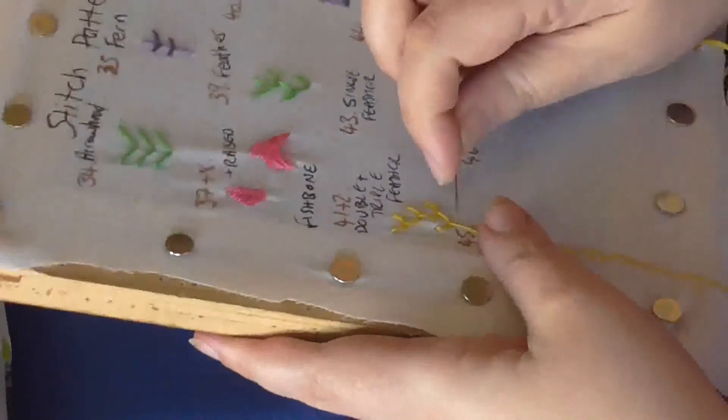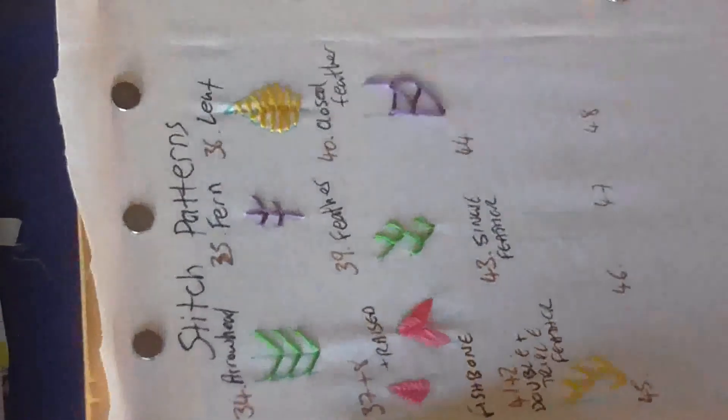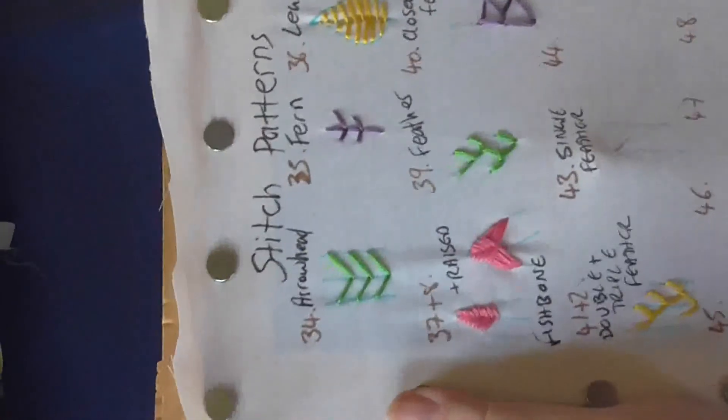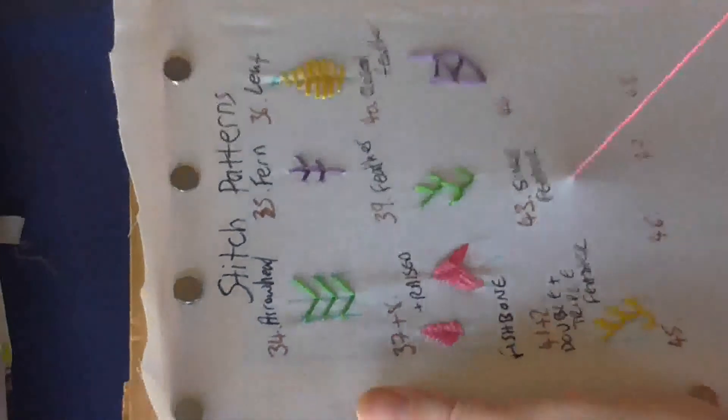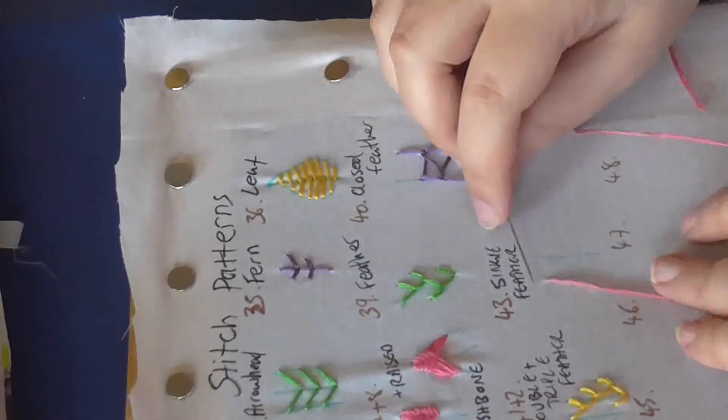So that's your double and triple feather stitch. Now we have a single feather stitch, which is close to the closed feather stitch. Again, it's another bordering banding stitch. So you come in, bring your needle about half the length of the stitch you want, and then across.